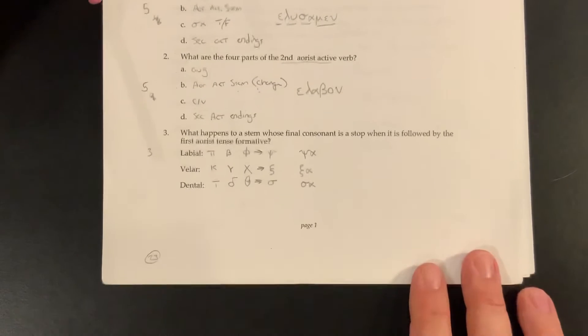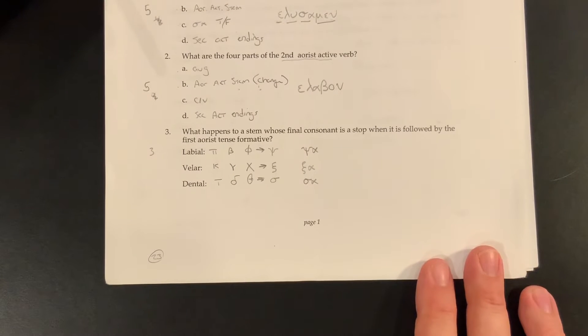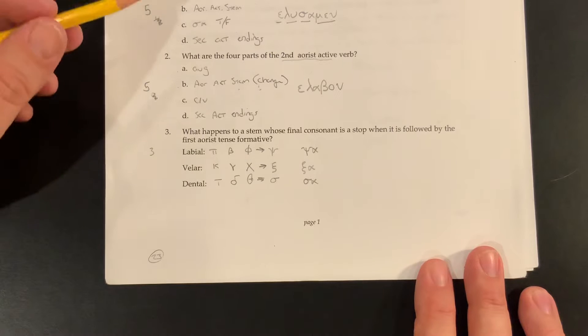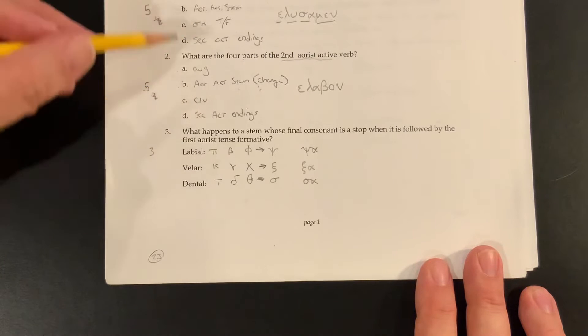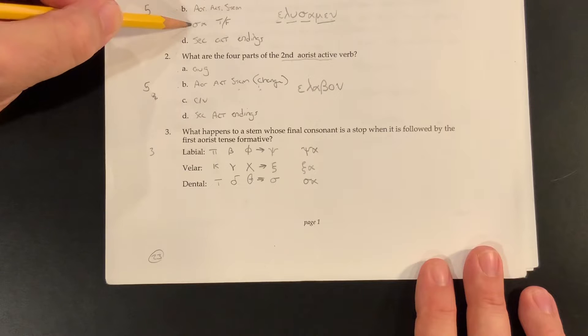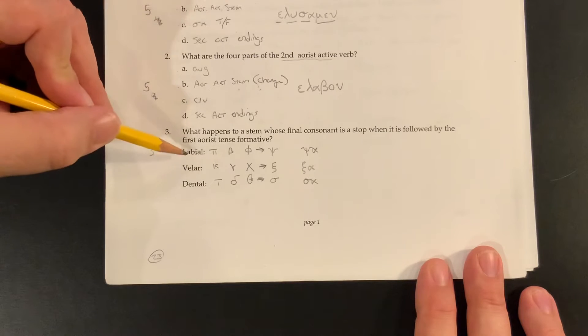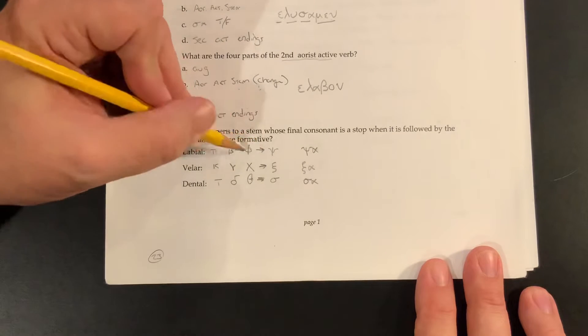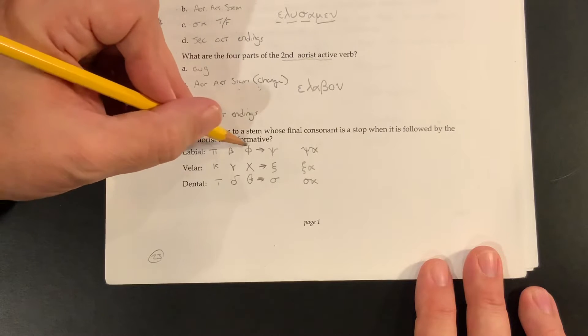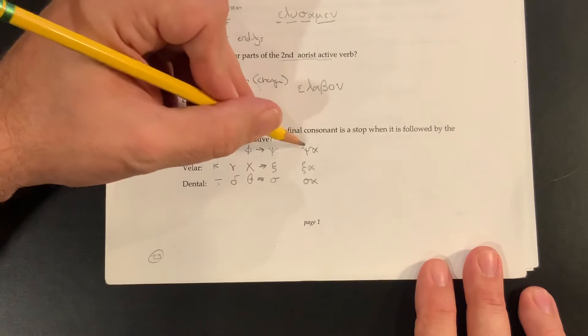Okay, let's move on to what happens to a stem whose final consonant is a stop when it's followed by the first Aorist tense formative. So we're talking about the sigma tense formative up here, and we're talking about what happens when it meets a labial. And what happens is all of these, the pi, the beta, and the phi, turn into a psi.